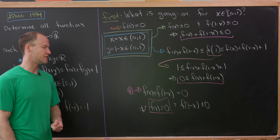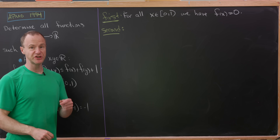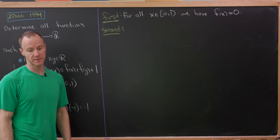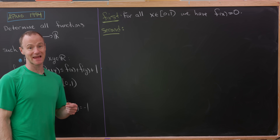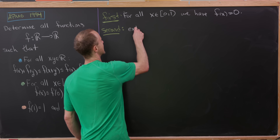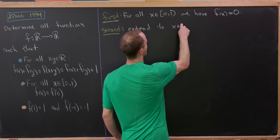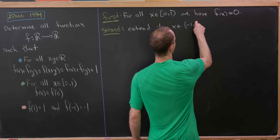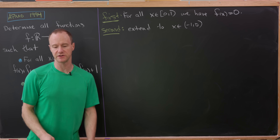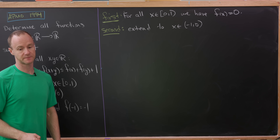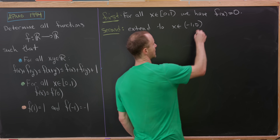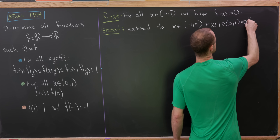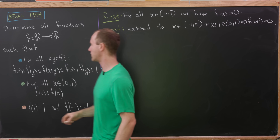Now let's extend the values of F to the interval (-1, 0). If X is on (-1, 0), then X + 1 is on (0, 1), which tells us F(X + 1) = 0 by what we've already proven.